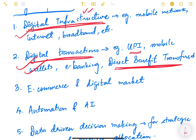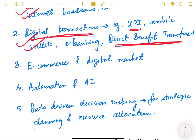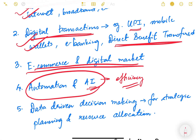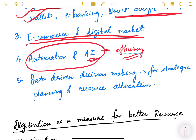This is an important component of digitizing the economy. The third one is e-commerce and digital markets — facilitating online trade and marketplaces. The fourth is automation and use of artificial intelligence to improve efficiency in production and service delivery. The fifth is data-driven decision making — leveraging big data and analytics, whereby large datasets are analyzed using computer coding and programs, for strategic planning and resource allocation.